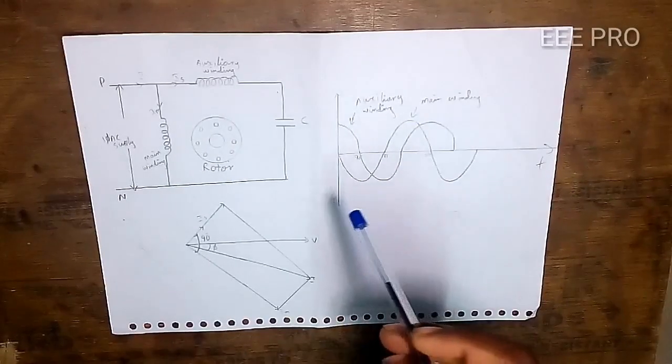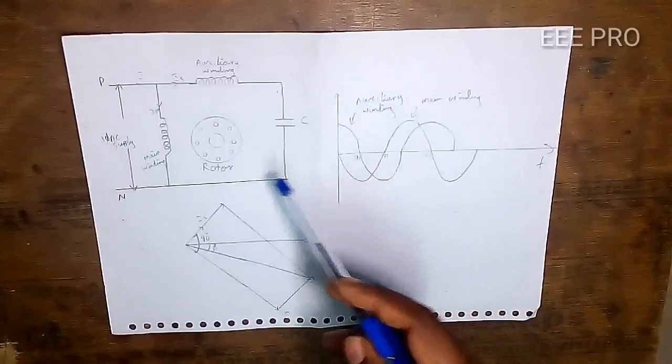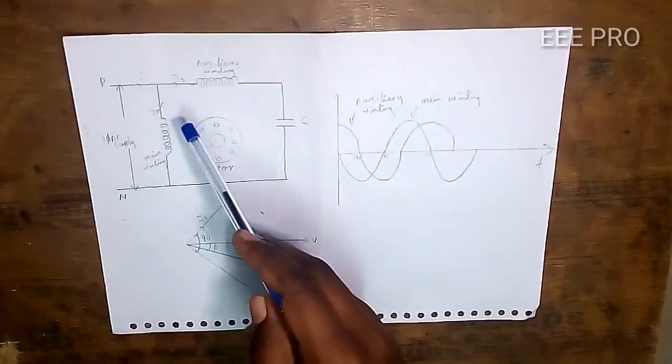This is the main winding with high reactance and low resistance. This is the auxiliary winding with low reactance and high resistance.